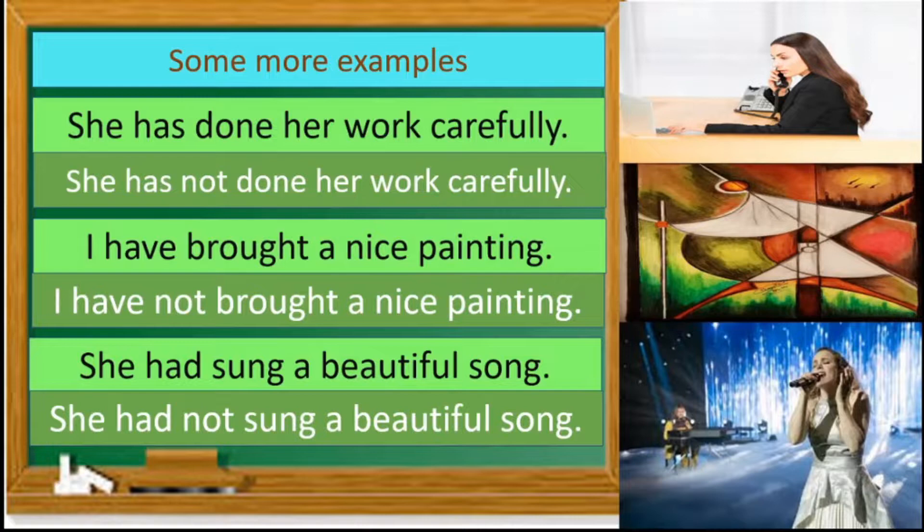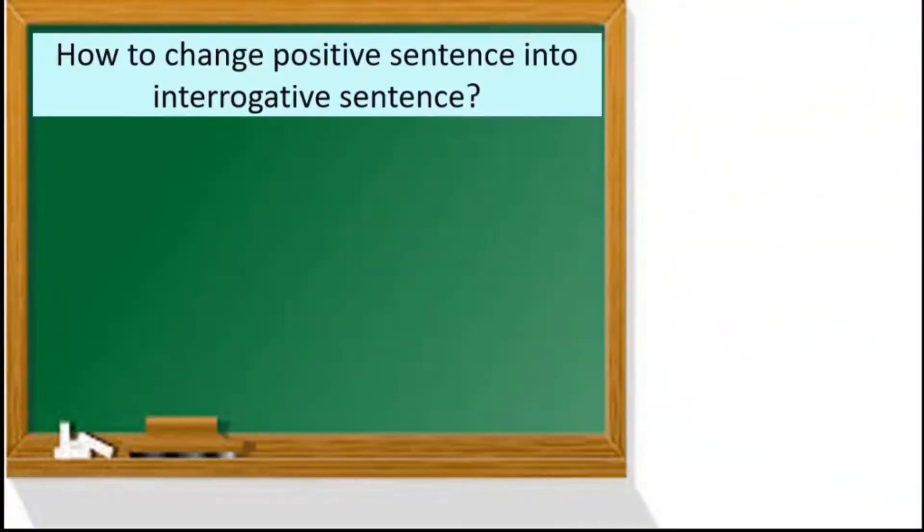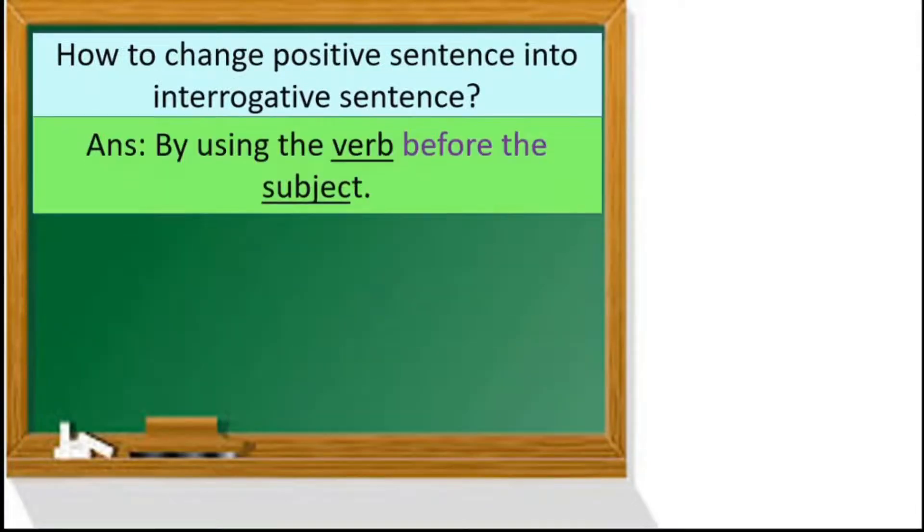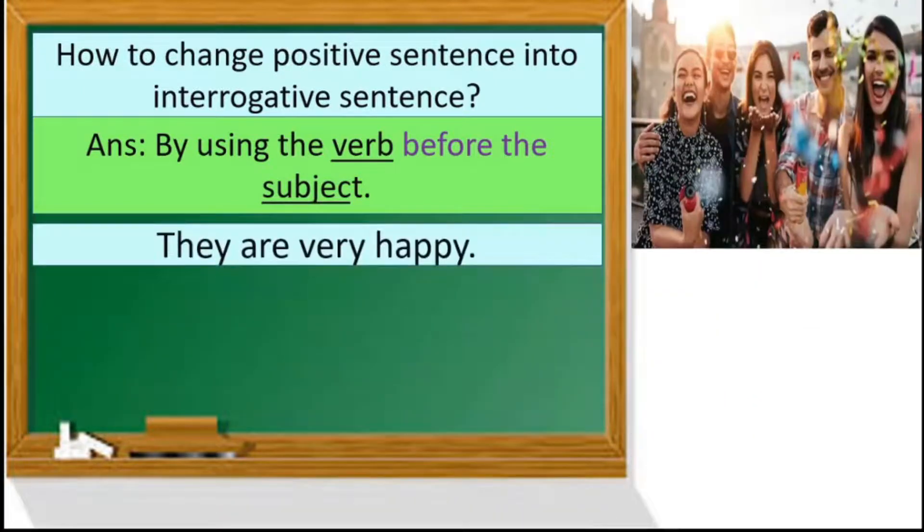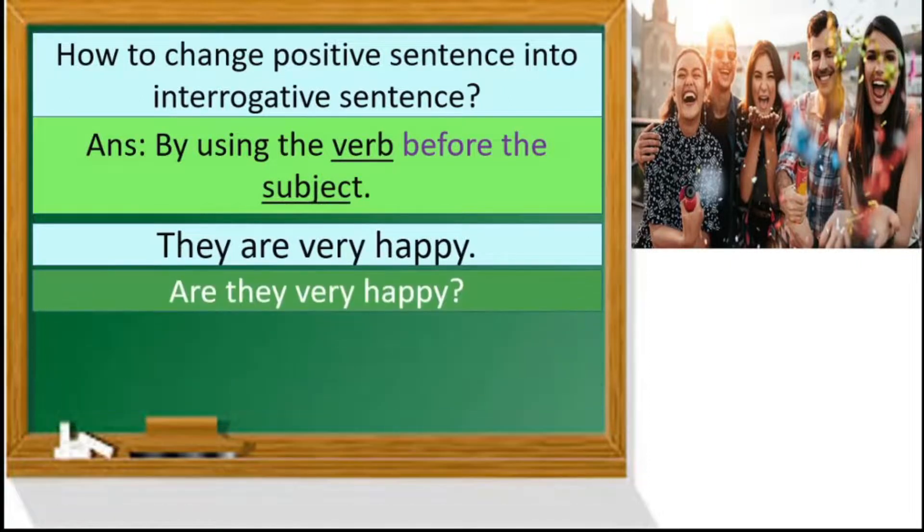So now we are going to see how to change positive sentences into interrogative sentences. Children, we can change into interrogative sentences by using the verb before the subject. So let us see with an example. They are very happy. Are they very happy? So you can see we have taken the verb before the subject, and we have to put a question mark at the end to make it an interrogative sentence.